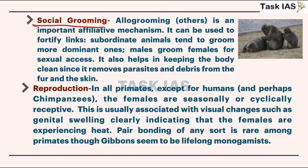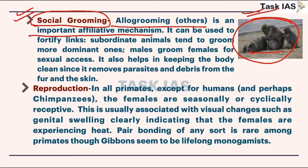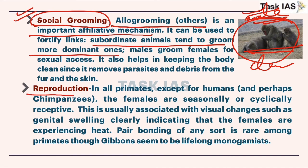Different social organizations are observed: solitary individuals, mother and her dependent offspring, family or monogamous pairs — a mating pair and their young ones (once the young ones become self-independent they live away from their mothers), and multi-male groups where several adult males, several adult females, and their young ones live together. For all primate species, one bonding is common: the mother-infant bond, which is also the strongest bonding in case of humans. Social grooming is another important affiliative mechanism — it helps in cleaning the body and also strengthens relations.